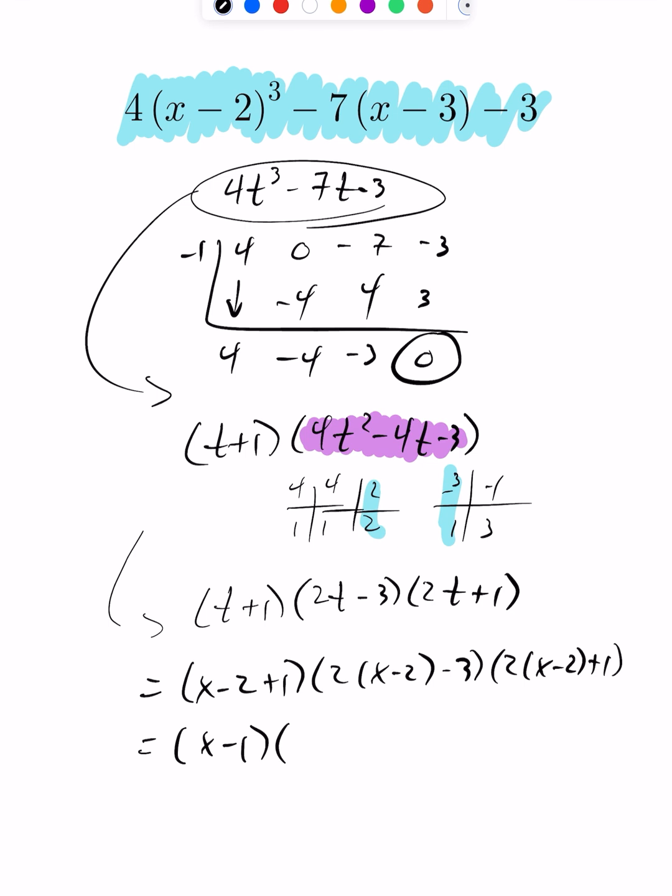You get x-1. This is going to give 2x minus 4 minus 3, that will be 2x-7. And this is going to be 2x-3.